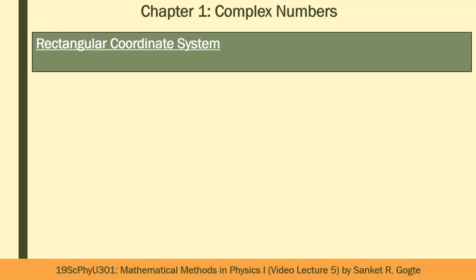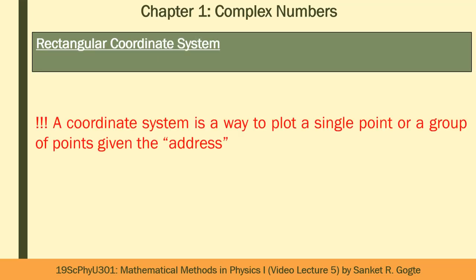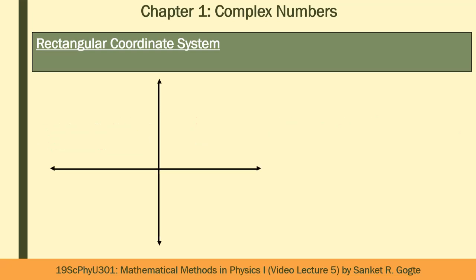What is a coordinate system? A coordinate system is a way to locate a point in the given figure, given the address or so-called coordinates of that point. We will confine our discussion to planes because complex numbers lie in the Argand plane.